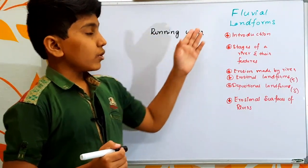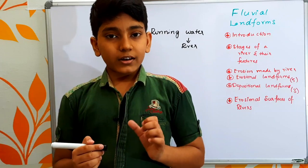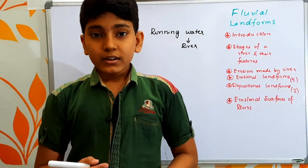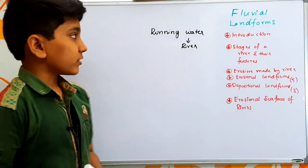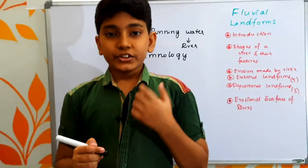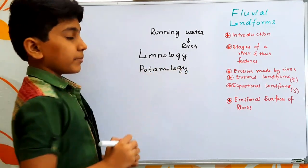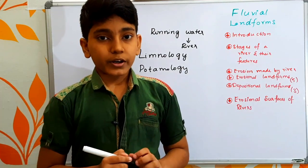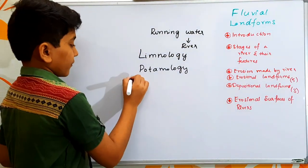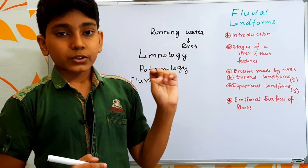Fluvial landforms are landforms created by rivers. The study of a fresh water ecosystem — found near rivers, lakes, ponds, etc. — is called limnology. The study of a river from a geographical approach is called epitomology. The processes involved in forming fluvial landforms are called fluvial processes. The term 'fluvial' is mainly related to rivers.